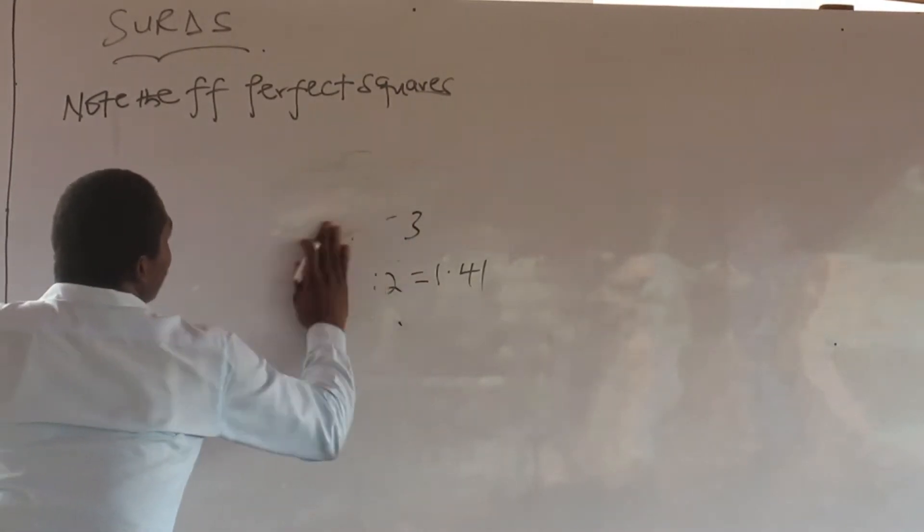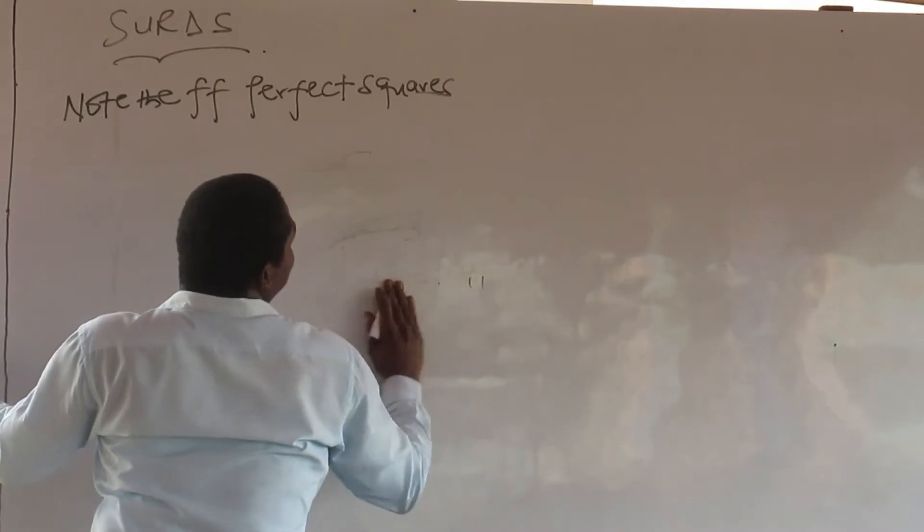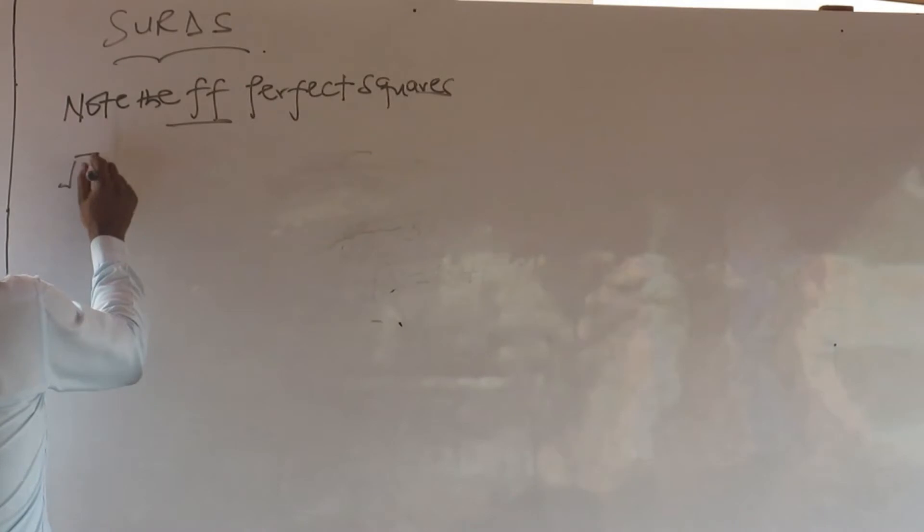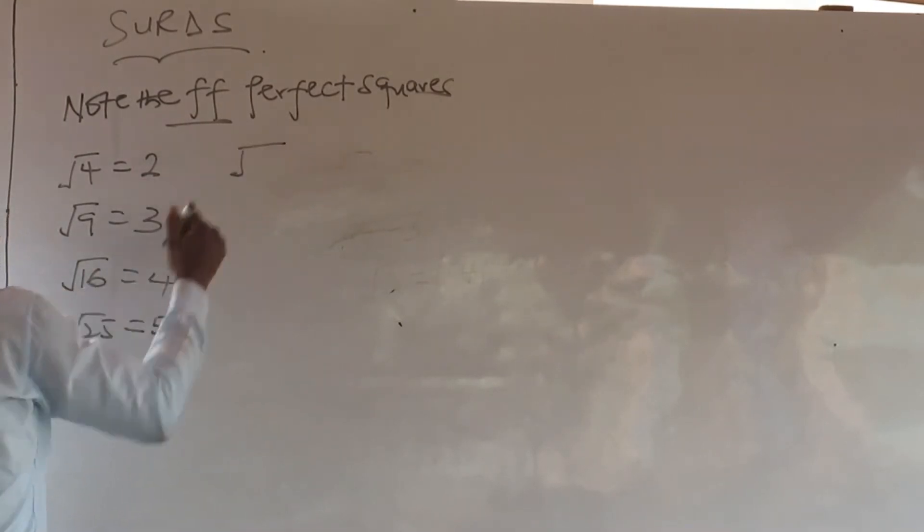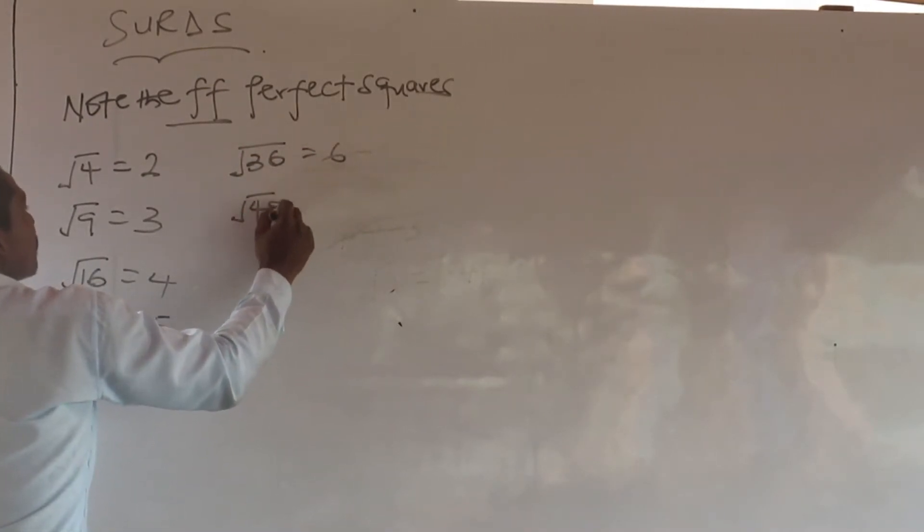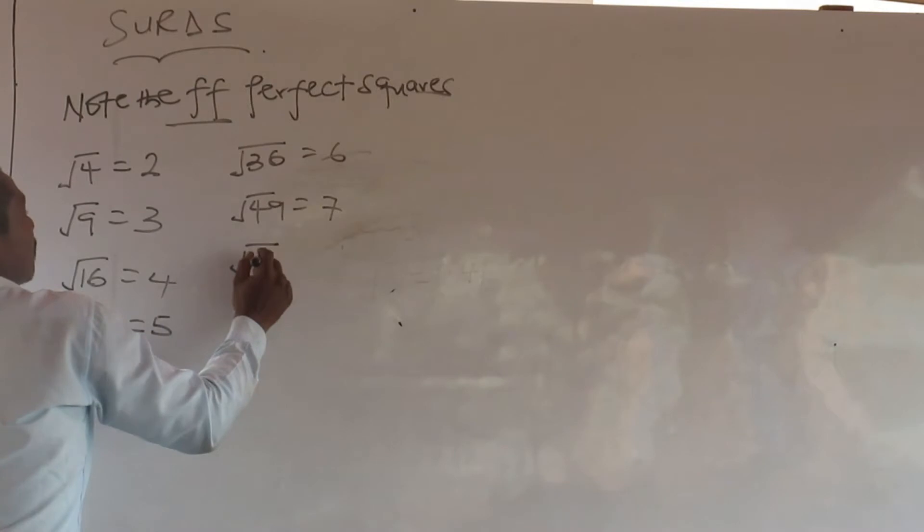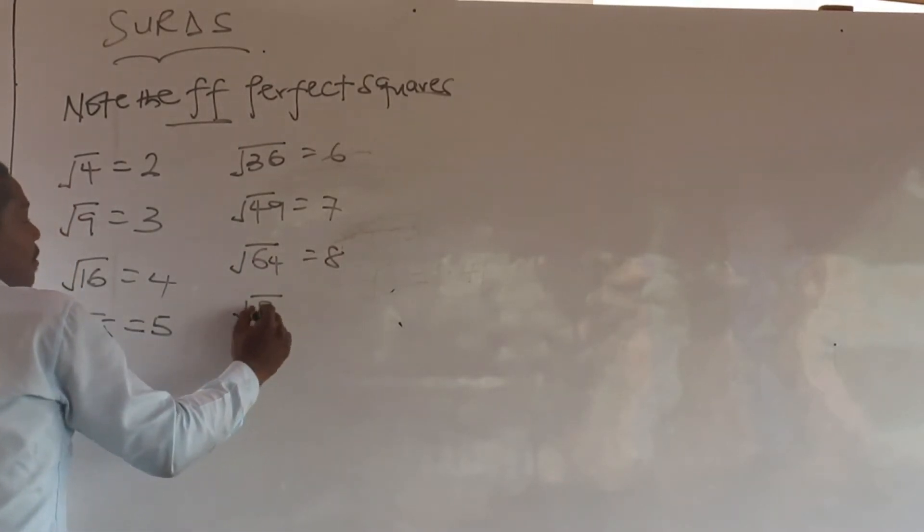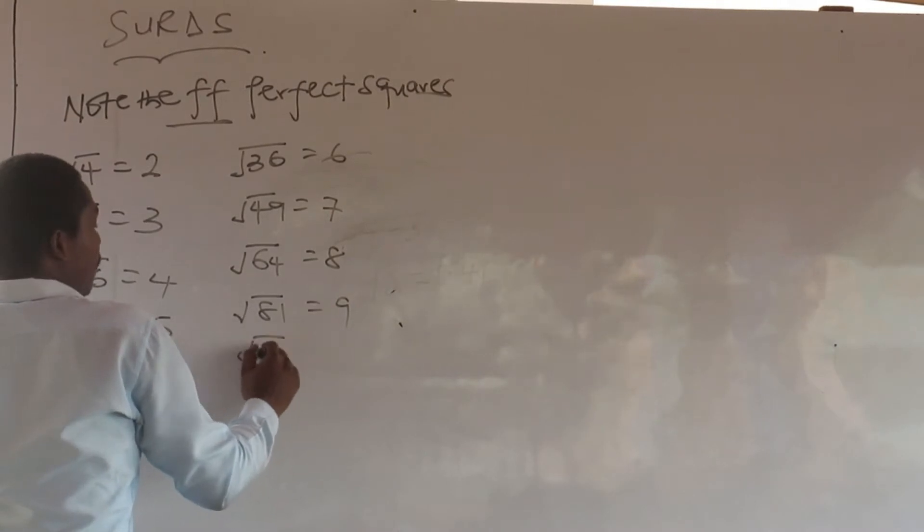So let's look at the following perfect squares. We have root 4 as 2, roots 9 as 3, roots 16 as 4, roots 25 as 5, roots 36 as 6, roots 49 as 7, roots 64 as 8, roots 81 as 9, roots 100 as 10.